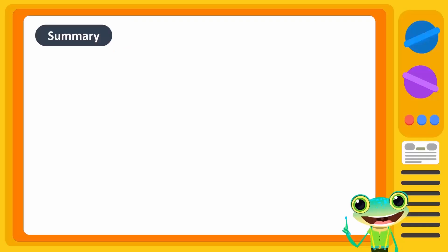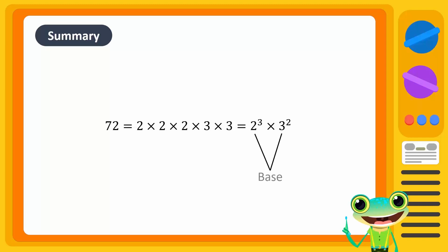In this video, we learnt about index notation. Index notation is a way of writing numbers in a more convenient form. The number that is being multiplied by itself is known as the base. Index is the number of times a base is multiplied by itself.